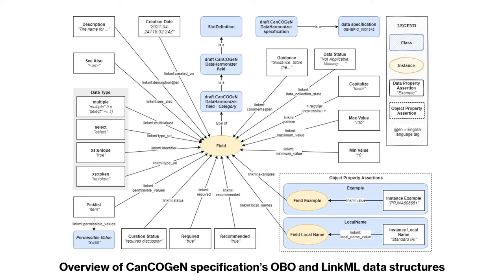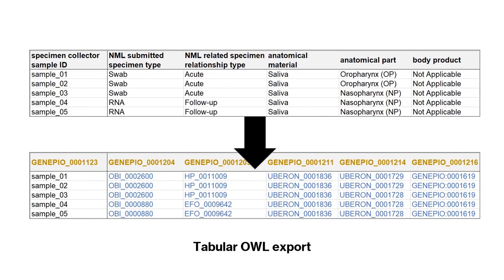Here we have an example of the tabular OWL export feature we are working on for the Data Harmonizer. It will enable the export of curated data that corresponds to the specification permissible values — i.e. pick lists — and convert them into ontology IDs, as well as the field instances.